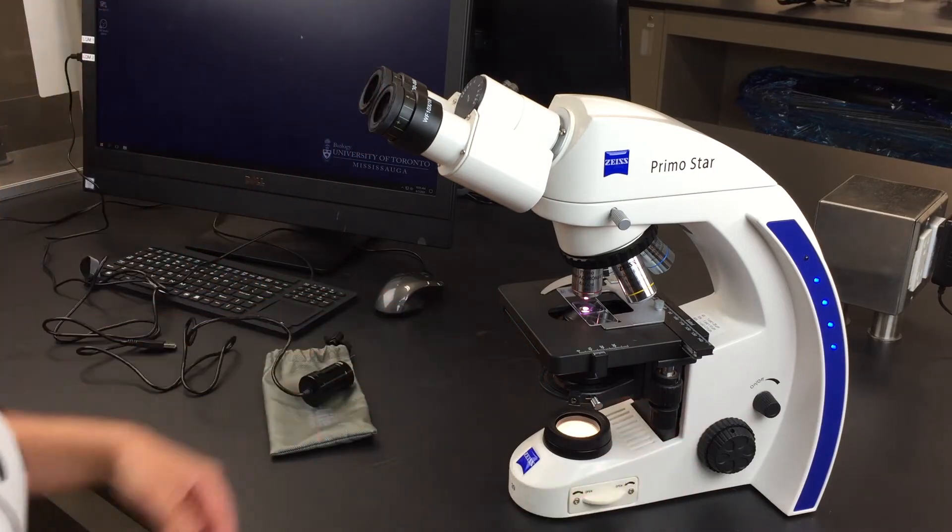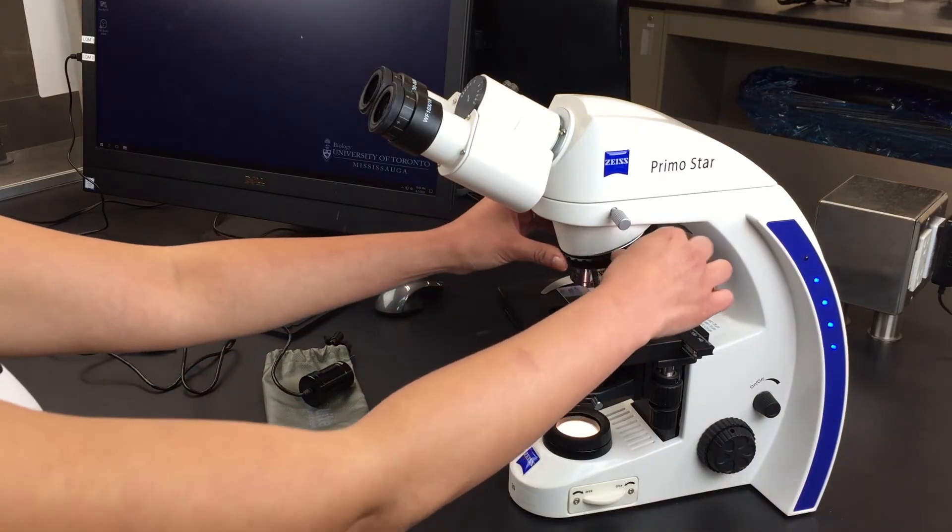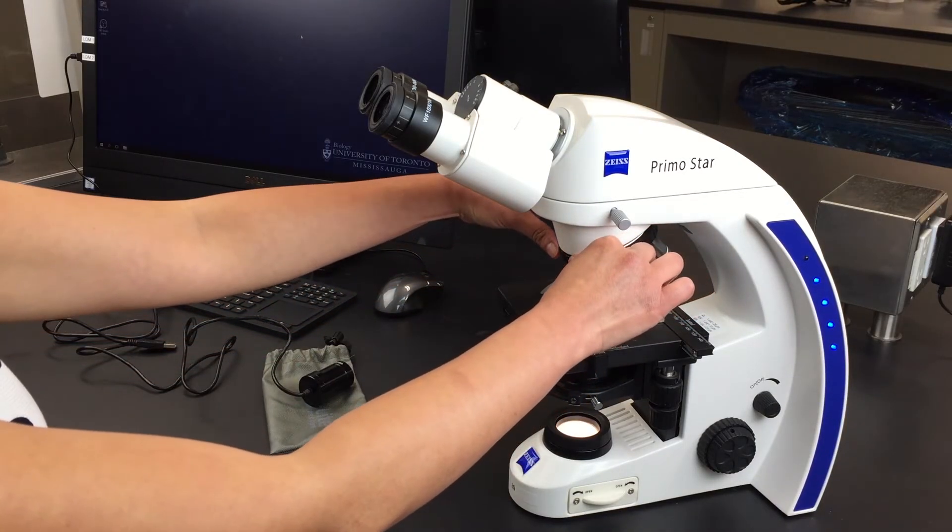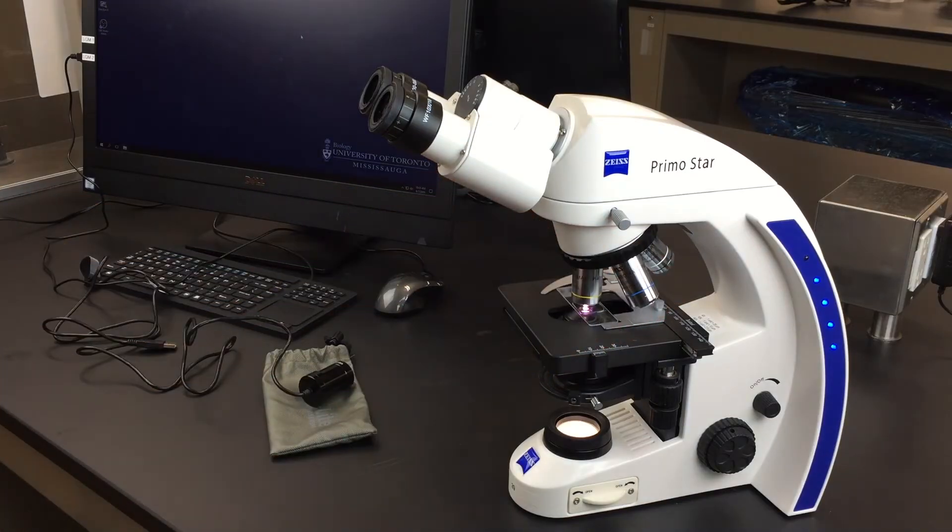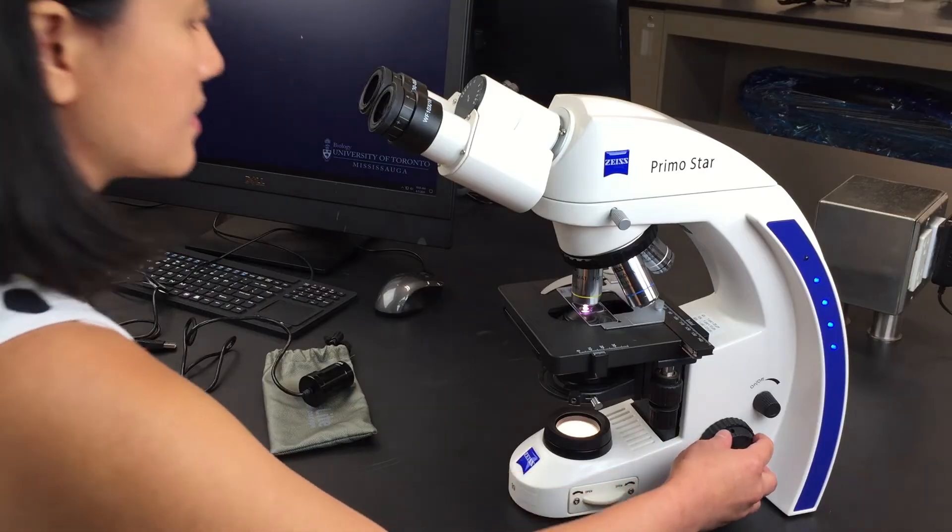When the image is in focus, you can crank up to another objective for higher magnification. When you change the objective, use the fine focus knob, which is the smaller ring outside.